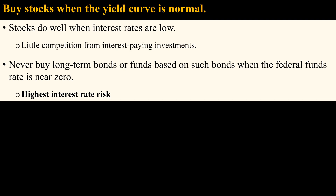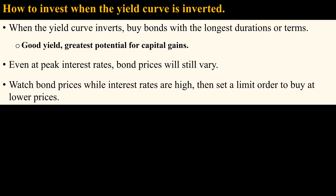So here is a good investment tip. When interest rates are low, buy stocks, because it is the only way to earn a decent return. Never buy bonds or funds based on bonds when the Federal Funds Rate is near zero, unless you are willing to hold until maturity. Otherwise, bonds or funds based on bonds will decline in price if interest rates rise, which is far more likely if the Federal Funds Rate is near zero. So when the yield curve inverts, that is the best time to buy long-term bonds. When interest rates reach a peak, it is the best time to own long-term bonds. Keep in mind that even when interest rates peak, there will be some fluctuation in bond prices, because other factors affect bond prices besides interest rates. It may be better to wait and see how bond prices change over time while interest rates are at their peak — then you could set a limit order to buy in the lower price range.